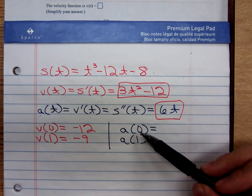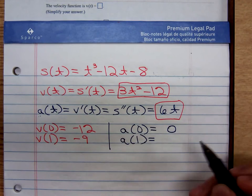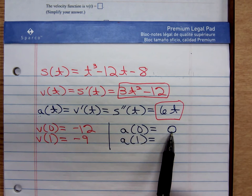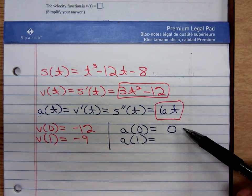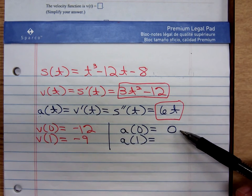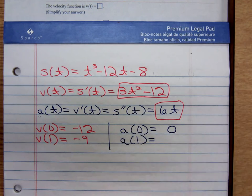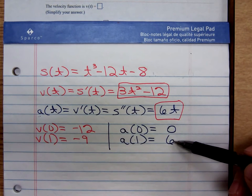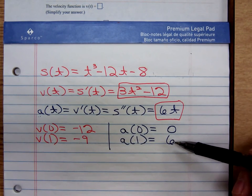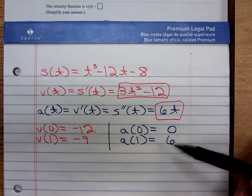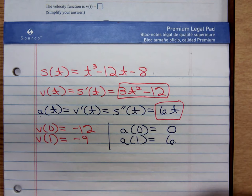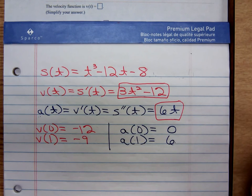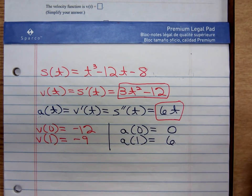We want acceleration at 0 and acceleration at 1. Acceleration at 0 is 0. That means at time t = 0, the velocity is not changing — the velocity is constant at that moment in time. The particle is not speeding up, it's not slowing down. At t = 1, 6 times 1 is just 6 centimeters per second squared. That's a positive number, meaning at t = 1 the velocity is increasing — it's speeding up. A negative acceleration would mean the object is slowing down.